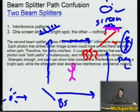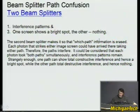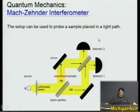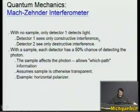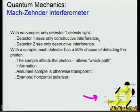Photons take both light paths or one depending on whether you put the second beam splitter there. This Mach-Zender interferometer — here's an actual real drawing of it — can be used to probe whether a sample is placed in the light path. With no sample in the light path, only one of the detectors will detect light. Detector one sees only constructive interference and detector two sees only destructive interference.